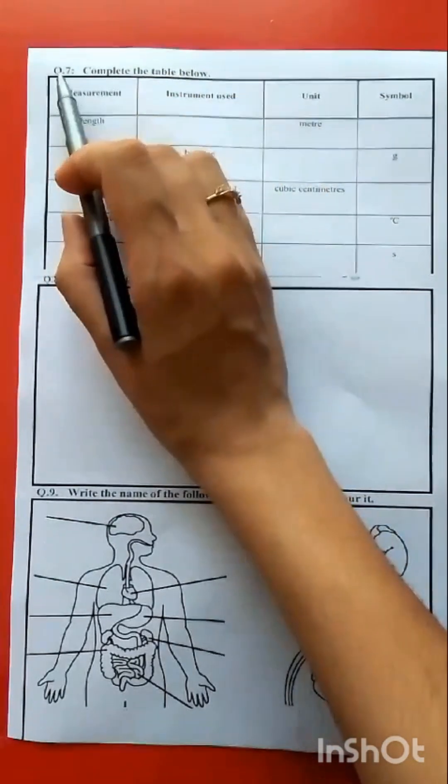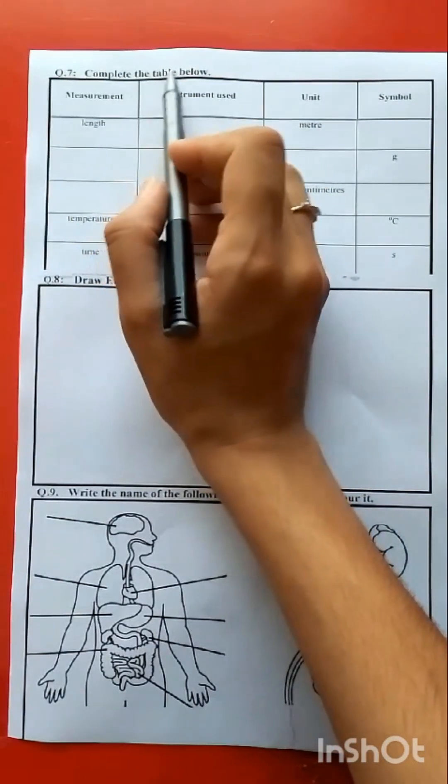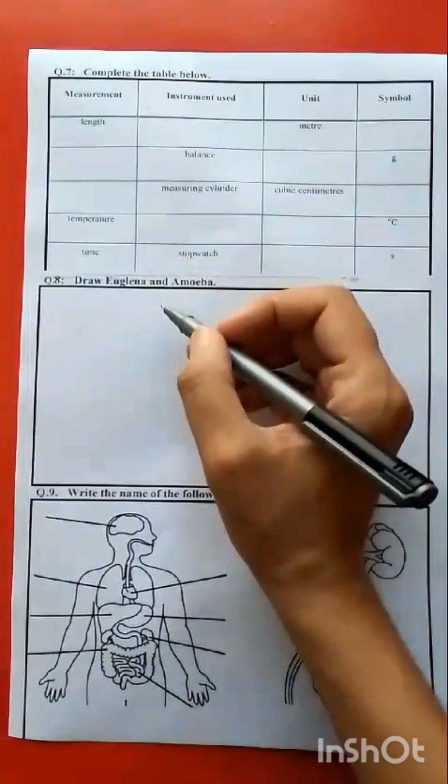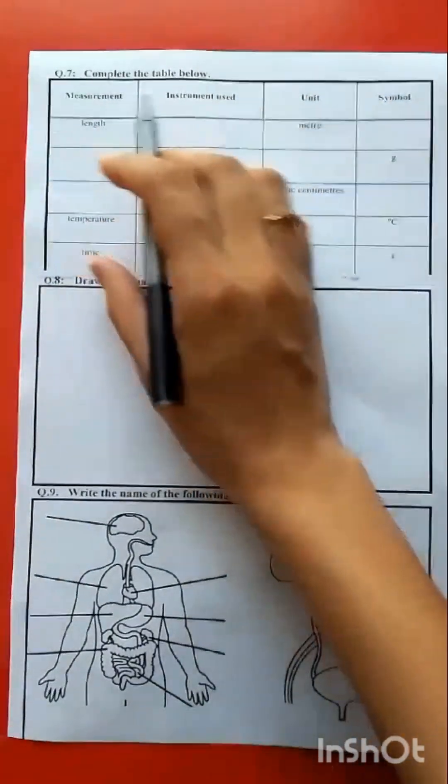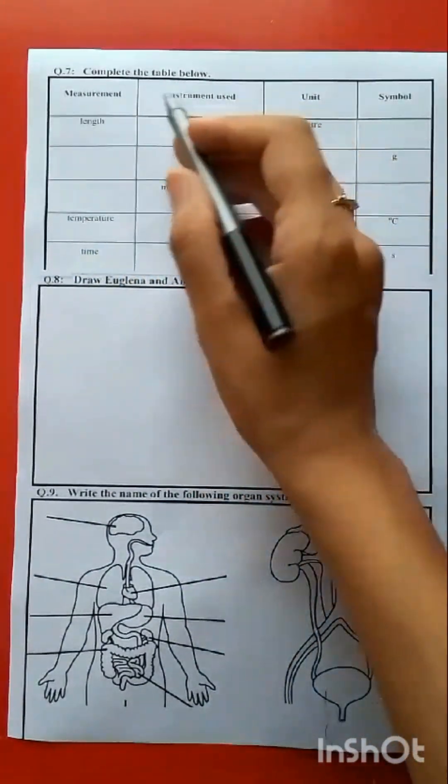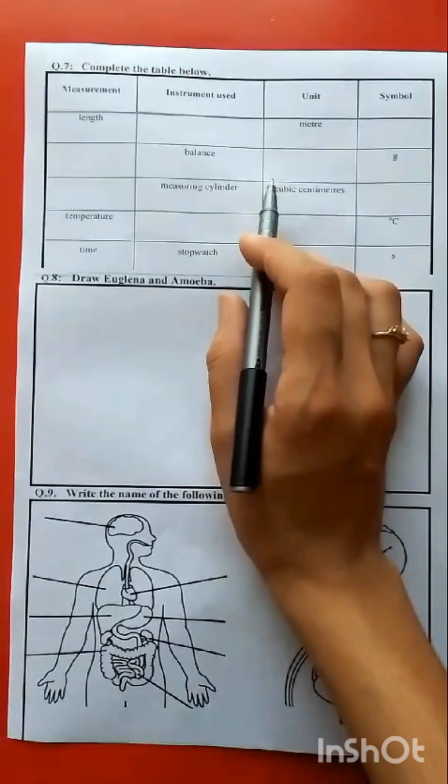Question number 7: Complete the table below. You have given a table with different columns and some spaces in the columns are empty.